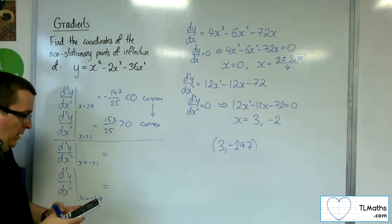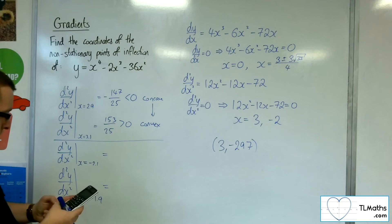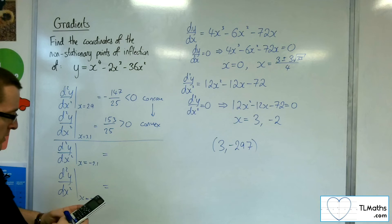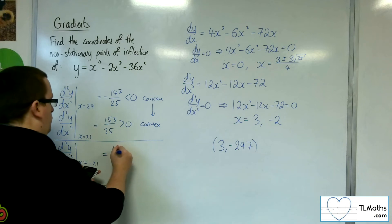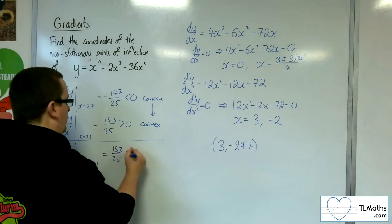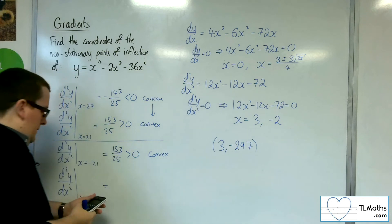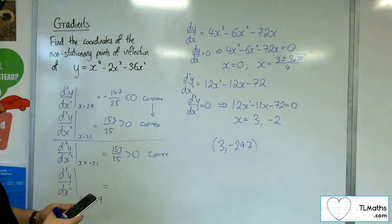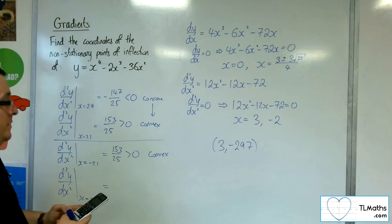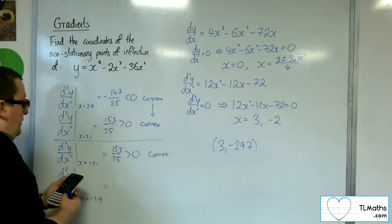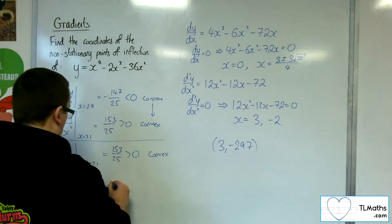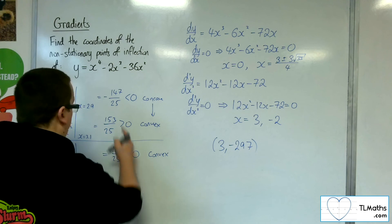So minus 2.1 going into the second derivative, 12 lots of minus 2.1 squared, take away 12 lots of minus 2.1, take away 72. And we get 12 lots of minus 1.9, take away 72, is minus 147 over 25. Kind of spooky, eh?